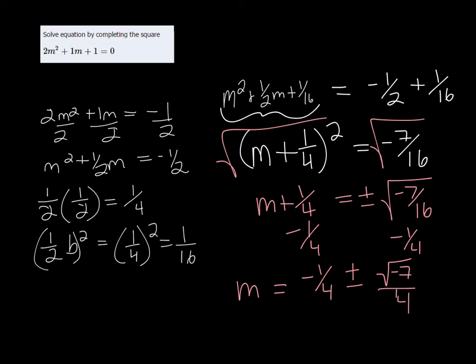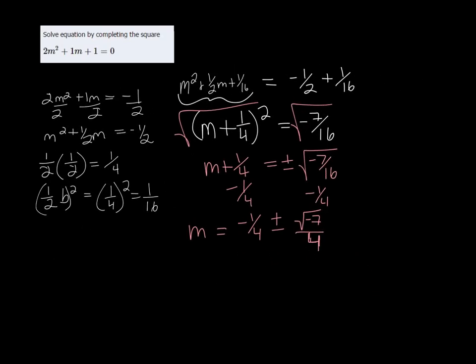But you don't want to leave a negative in the square root, so we have to take care of that. The square root of -7 would be like the square root of -1 times 7.